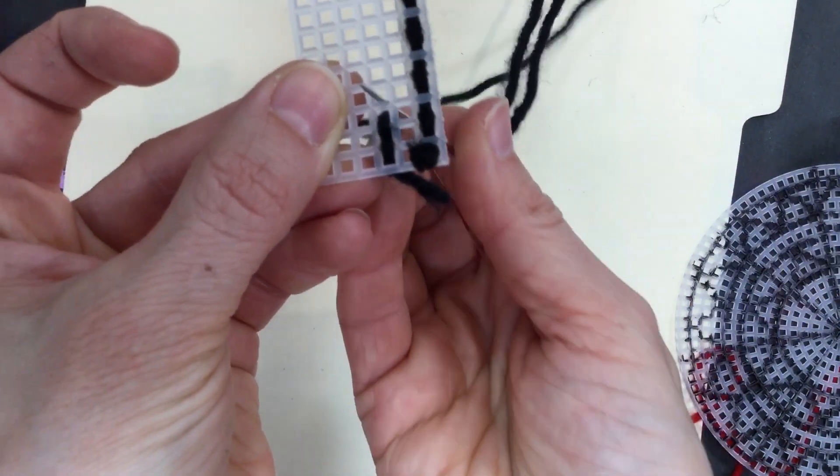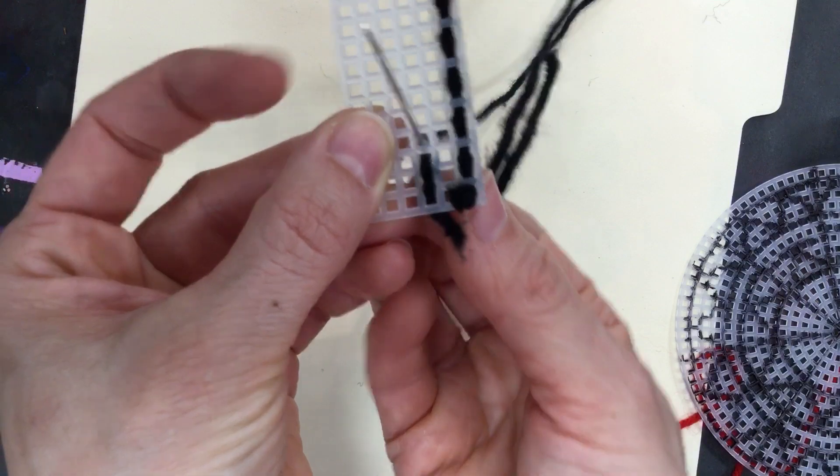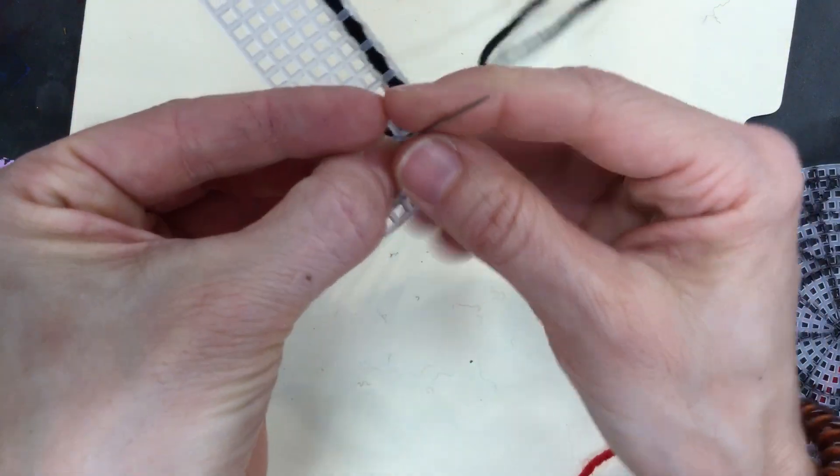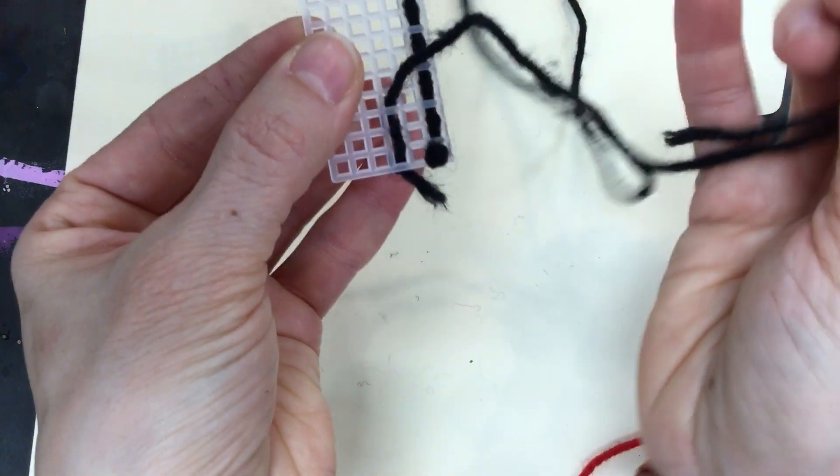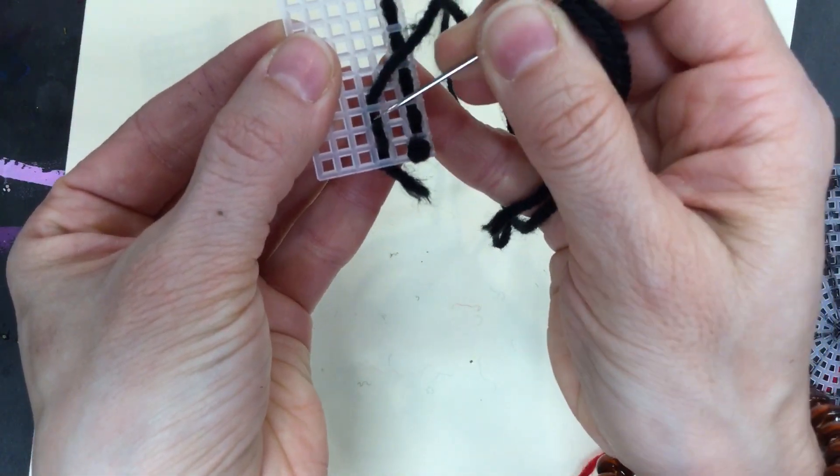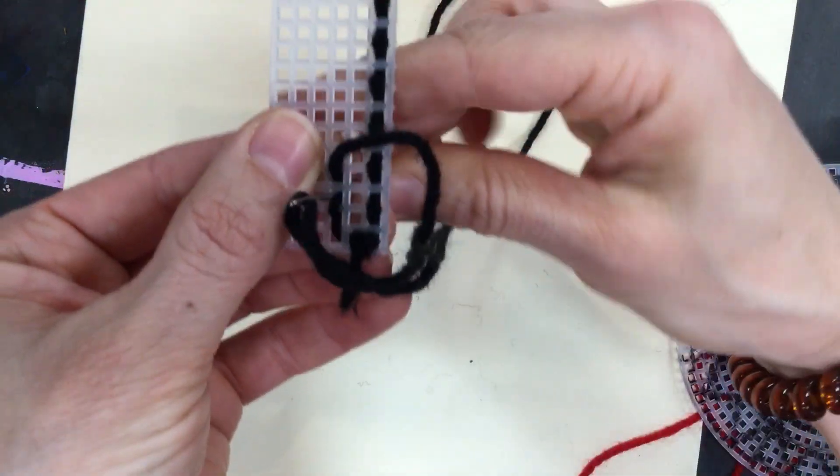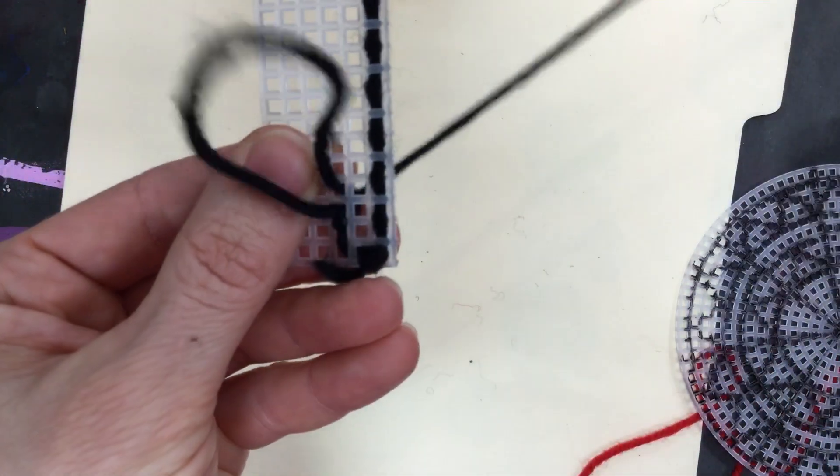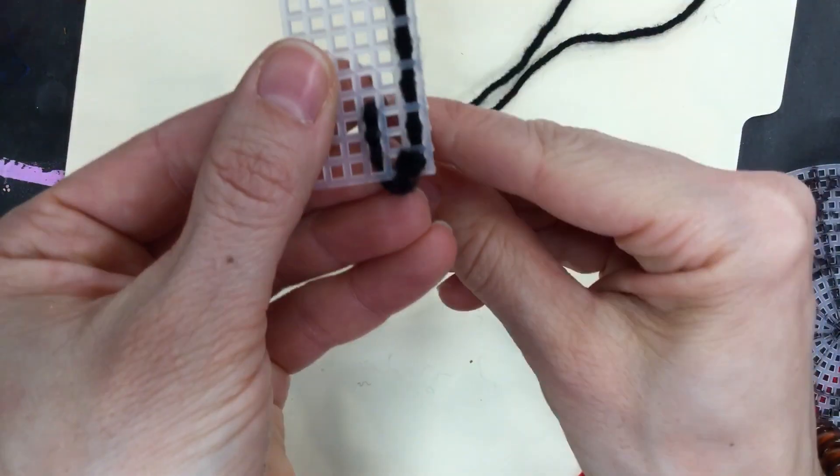So my next one, I'm gonna go to my next square right there. Now I'm gonna go back once, so I'm not going forward, I'm going backwards. You're looping it in order to cover the canvas. Does that make sense?